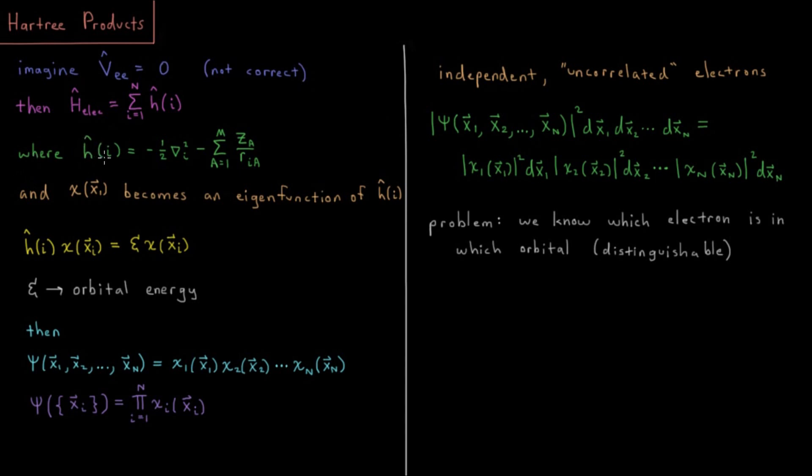This h_i, little h operator for electron i, would be the electron's kinetic energy, negative one-half del squared i, minus the sum from a equals 1 to m, the sum over all nuclei of the charge of that nucleus, the number of protons, divided by the electron's distance from that nucleus. We find out what the energy operator for an individual electron is from these terms, and all of those added together form our total electronic Hamiltonian if they didn't repel one another.